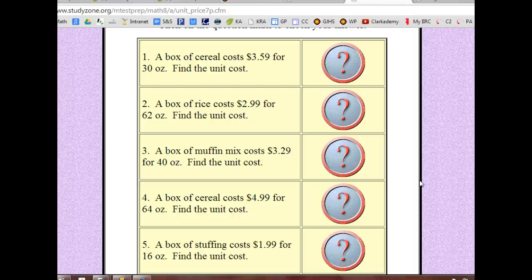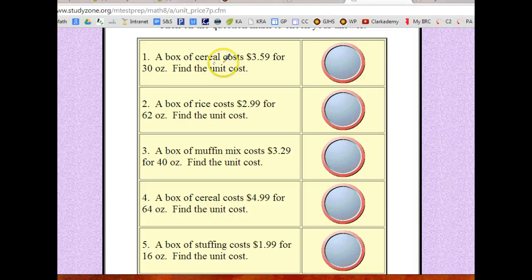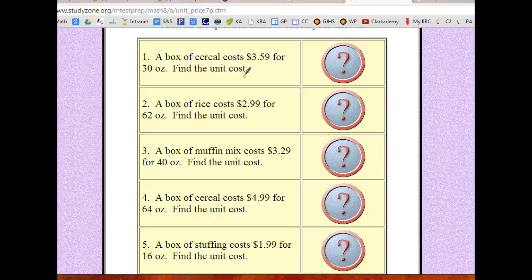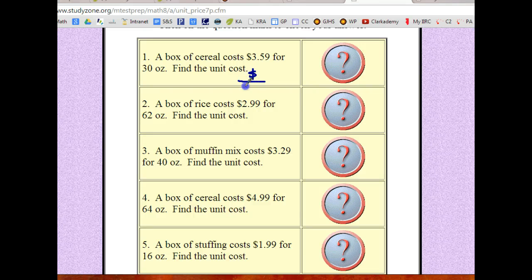And in order to calculate unit rates, we should set it up and I'm gonna write on top of here. I'm gonna use like a dark blue. So let's do this. The box of cereal cost $3.59 for 30 ounces. Find the unit cost. Now when they ask for a unit cost, what they're really saying is they want to know how much money it costs for every ounce.